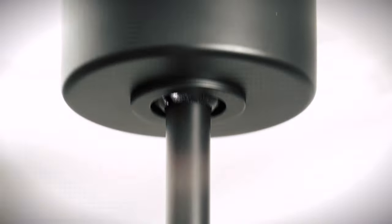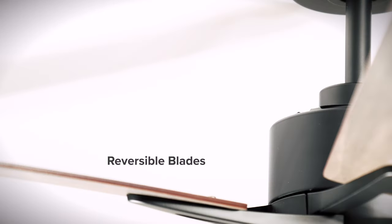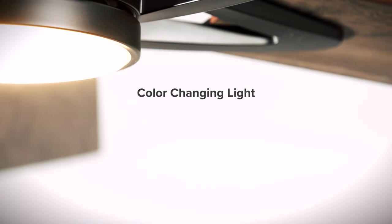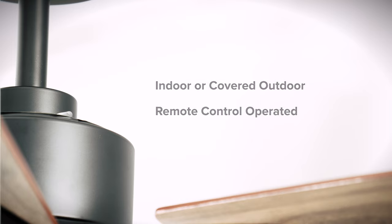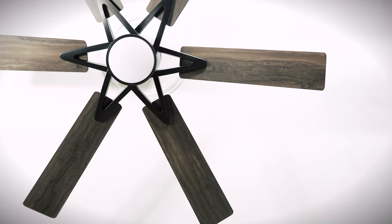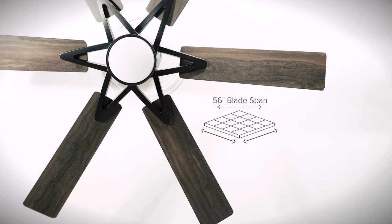The InterVail is a windmill style ceiling fan with reversible blades and a color changing light. The fan is damp rated for indoor or covered outdoor use and is remote control operated. The fan is best suited for great spaces with available 56 inch or 72 inch blade spans.